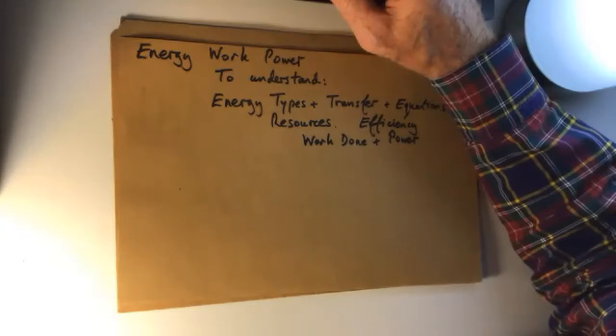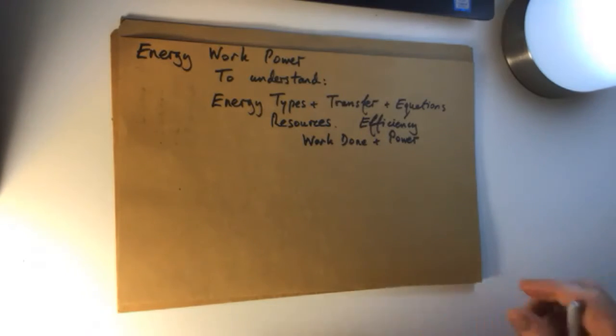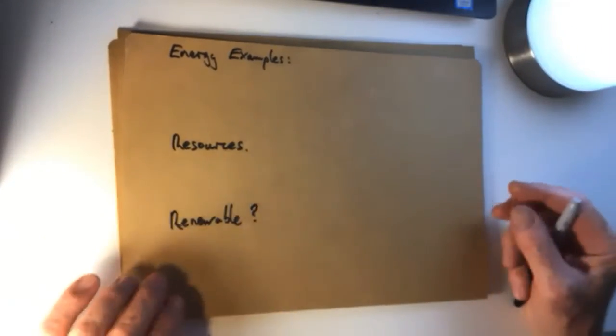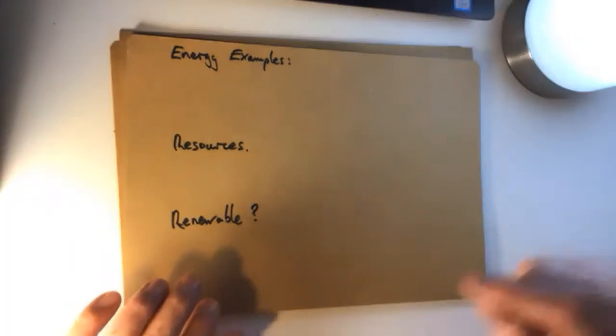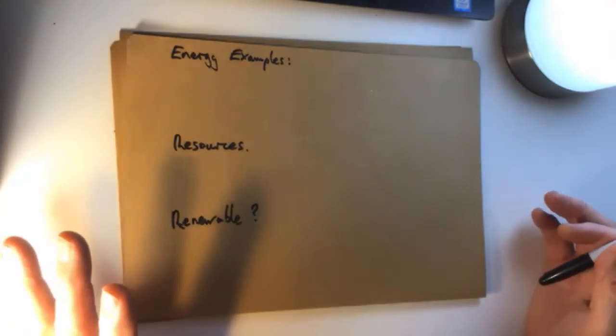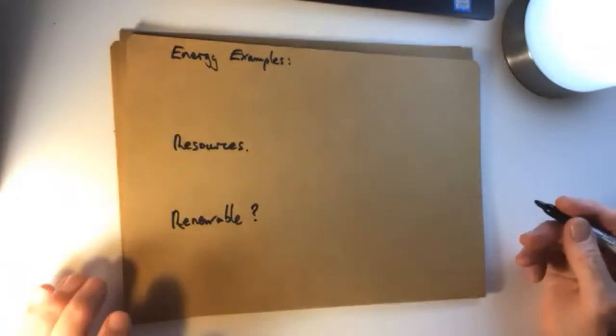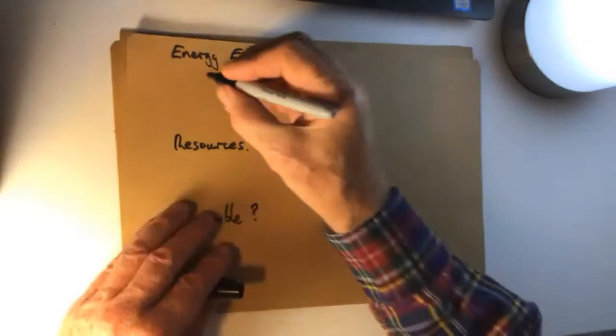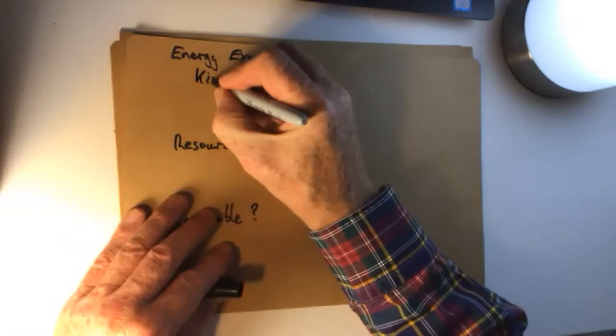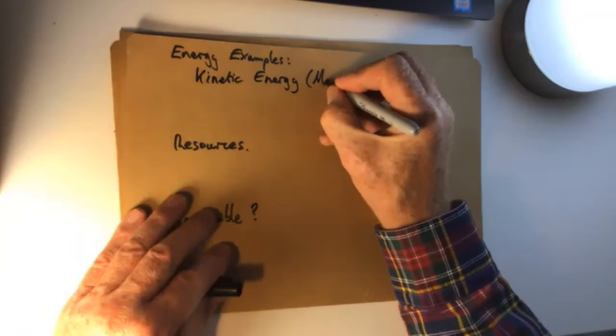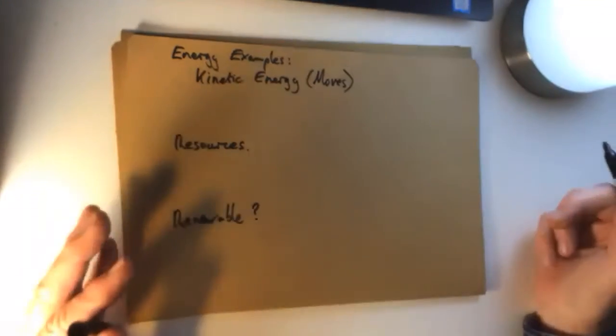Energy types. Well, I put energy examples because that's kind of types of energy, isn't it guys? Energy examples would be energy types. Now, you guys will know a lot already. For instance, if something moves, we call it movement. Energy wouldn't be technical enough for physics. So what we do is we call that kinetic energy. Kinetic energy is movement. If something moves, then it's got kinetic energy.